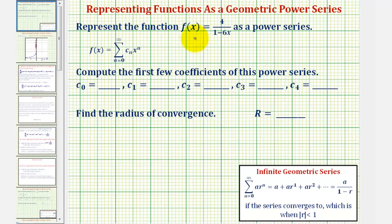We want to represent the function f(x) = 4 divided by the quantity (1 - 6x) as a power series, then compute the first few coefficients of the power series, and then find the radius of convergence.